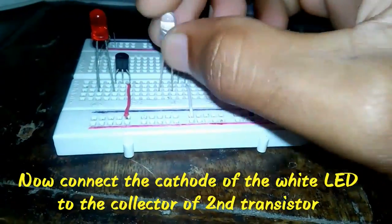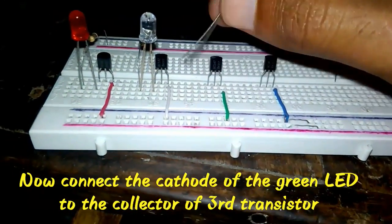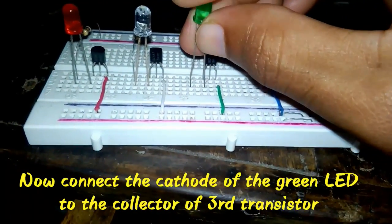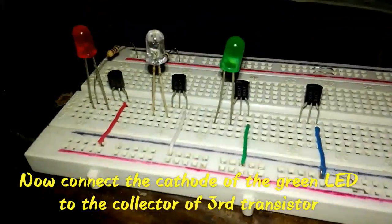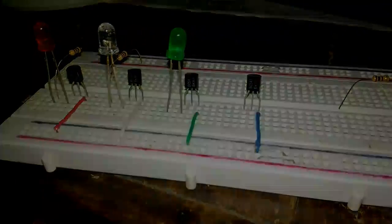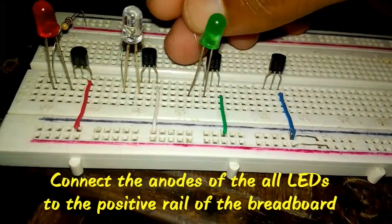Now connect the cathode of the green LED to the collector of the third transistor. Now connect the anodes of all LEDs to the positive rail.